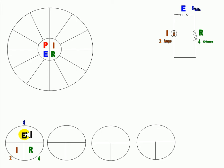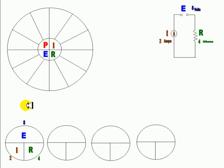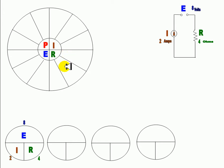E divided by I is R. E divided by R is I. I times R is E. I hope you understand this format. Let's start adding it up here. E divided by I goes in here as R. So R goes here in the third quadrant.